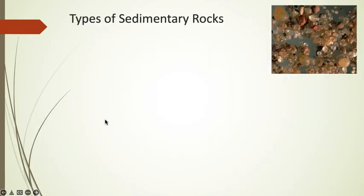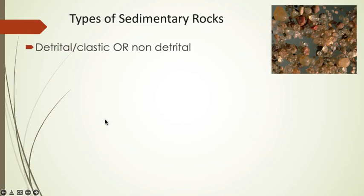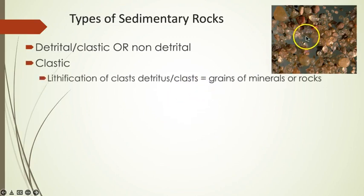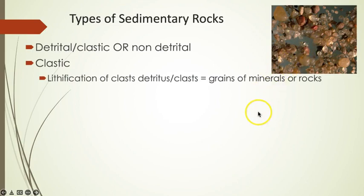Sedimentary rocks can be arranged into two categories: detrital, also called clastic, and non-detrital, or non-clastic. Clastic sedimentary rocks form principally through the lithification of detritus, or clasts — grains of minerals and rock fragments. The source rocks for sediments are typically composed of silicate minerals, so clasts are commonly silicate minerals, such as quartz and clays.